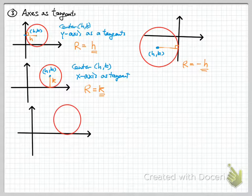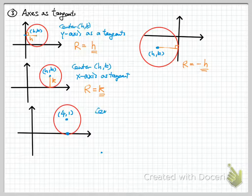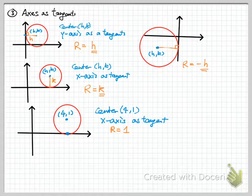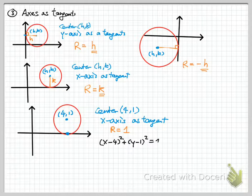For example, suppose the circle uses the x-axis as the tangent and the center is (4, 1). All we need is to find the radius. Since it uses the x-axis as the tangent, the radius equals 1, the y-coordinate. So the equation of the circle is (x - 4)² + (y - 1)² = 1. That is the standard form; you can change it to general form if required.